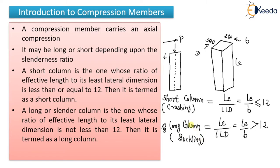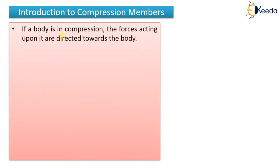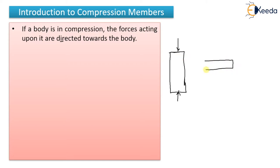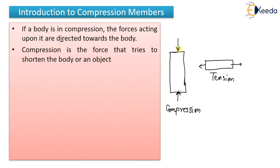If a body is in compression, the force acting upon it is directed towards the body. As I showed in the diagram, if the nature of force is compressive, it is directed towards the body. In contrast, for a tension member, the force is directed away from the body. But in case of a compression member, the forces are directed towards the body. Compression is the force that tries to shorten the body of an object.